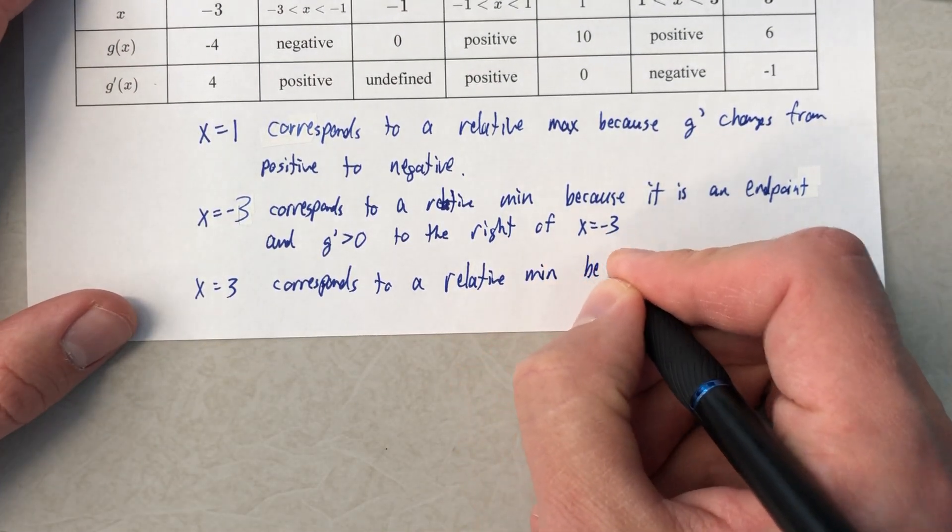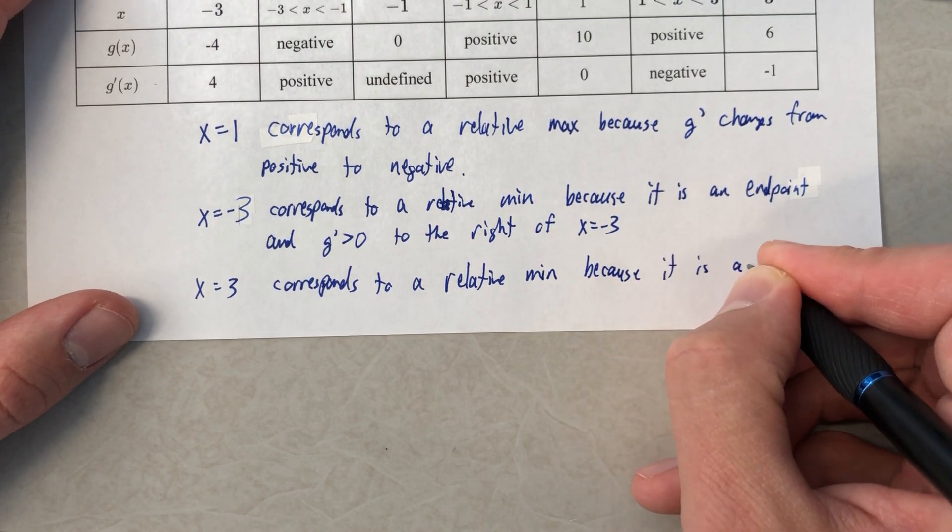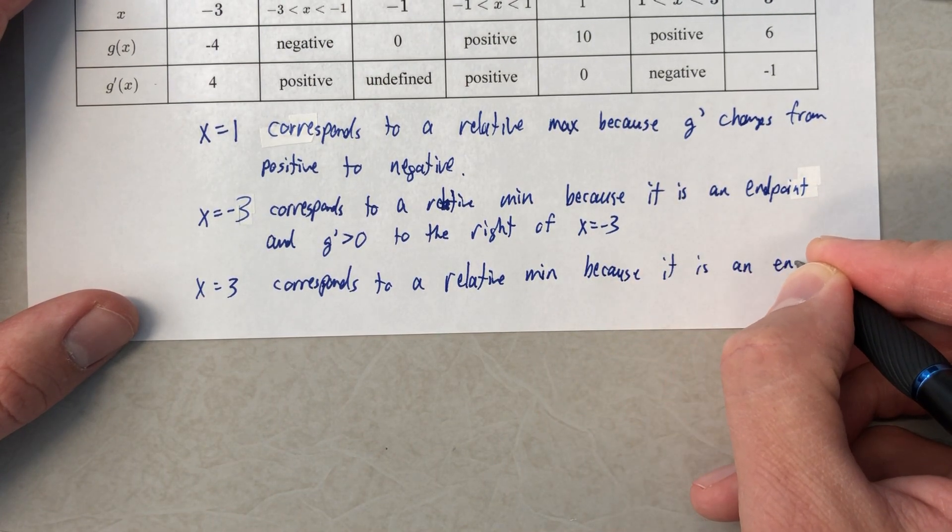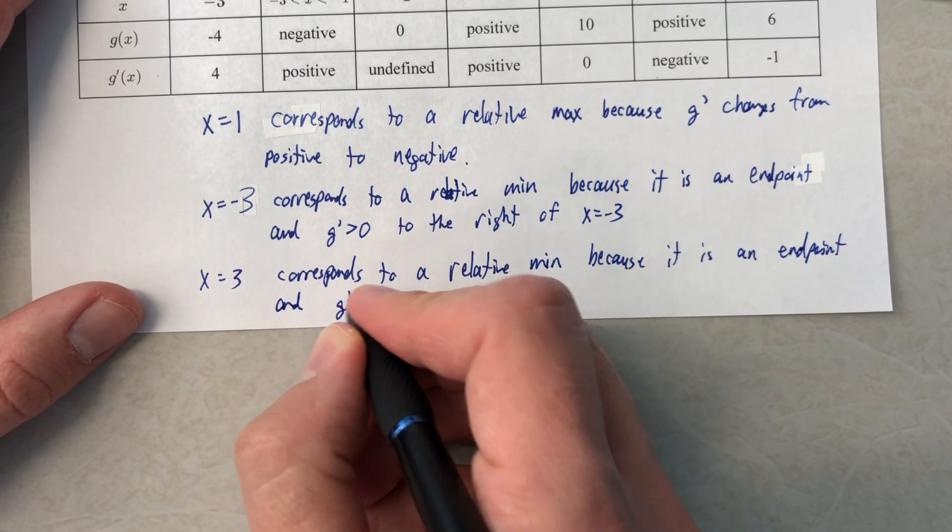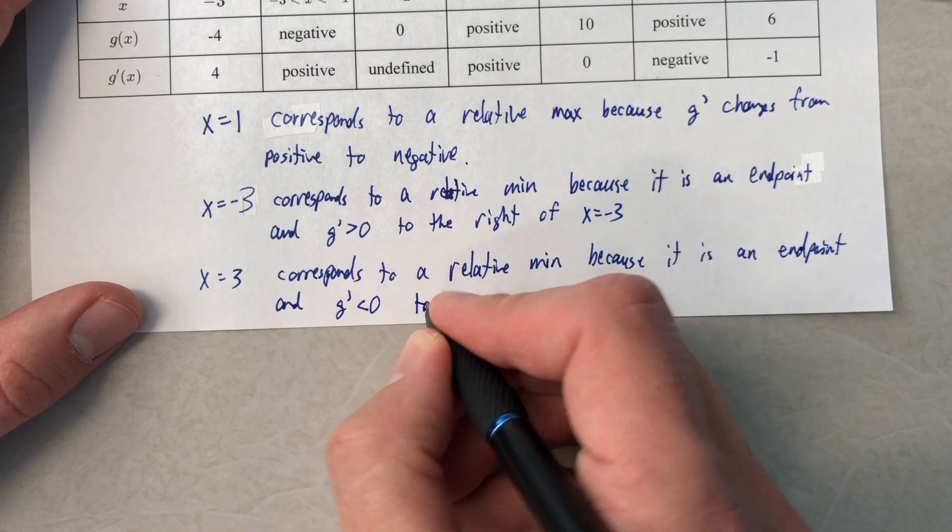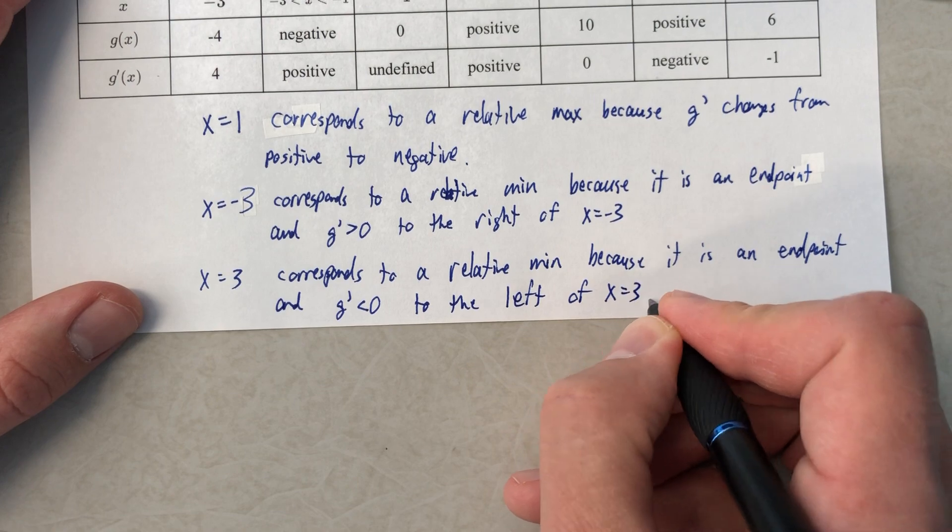Relative min because it is an endpoint and g prime is negative to the left of x equals 3.